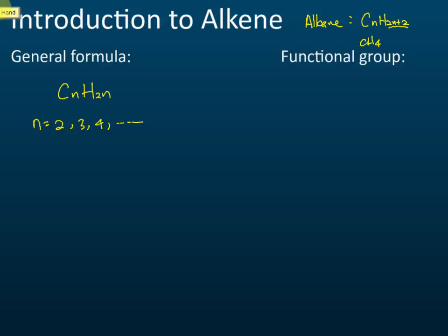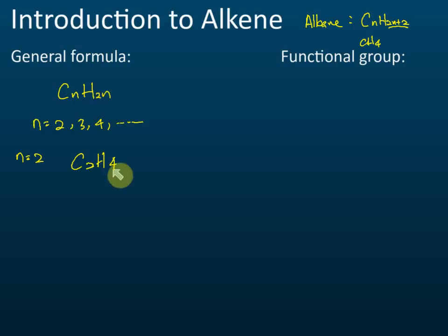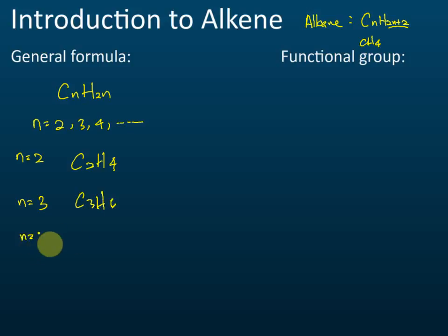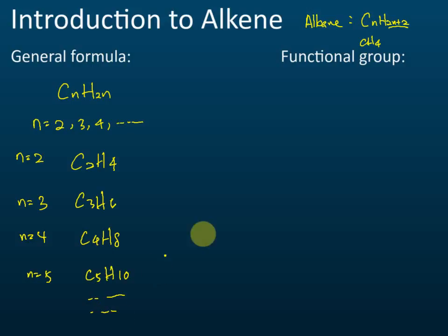Using the general formula CnH2n: when n=2, the formula is C2H4 (2×2=4). When n=3, the formula is C3H6. When n=4, C4H8. When n=5, C5H10, and so on. That is the general formula for alkene.